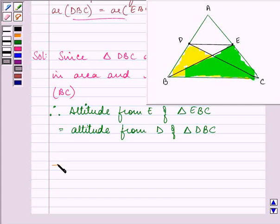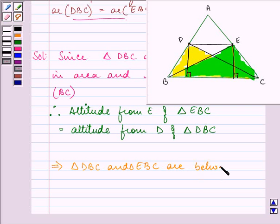This implies this altitude will be equal to this altitude. Let me darken this line. Then this implies that triangle DBC and EBC are between the same parallel lines.